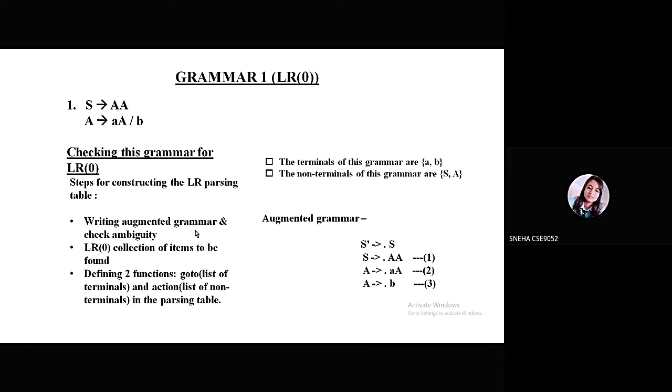While writing the augmented grammar, we are breaking the non-terminal A into two distinct productions and also adding another production S' tends to S, which will help the LR parser identify when to stop the parsing and announce the accepted states or the accepted input.